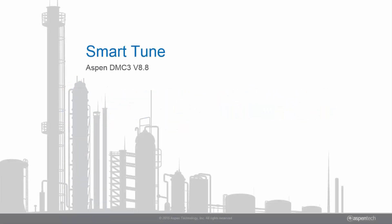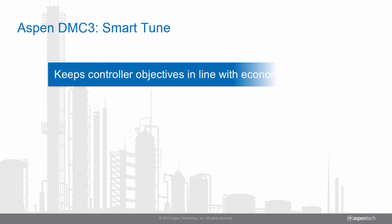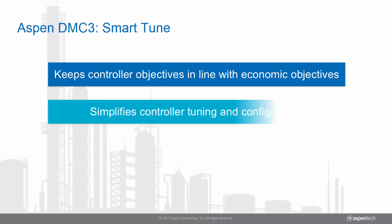Introducing a new Aspen DMC3 engine: SmartTune. SmartTune is an innovative Aspen DMC3 engine that keeps the controller objectives in line with constantly changing economic objectives. This revolutionary engine lowers the barrier to controller design and maintenance by simplifying controller tuning and configuration.